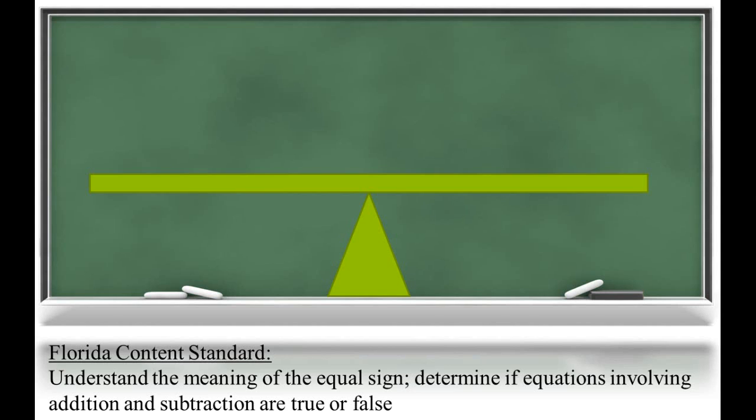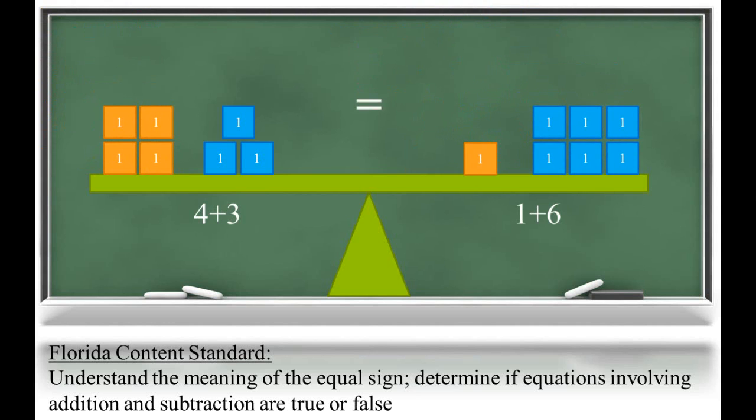Now let's add number values to this concept. If the left side represents 4 plus 3 and the right side represents 1 plus 6, we can see that these amounts are balanced or equal. Equal means having the same value as.